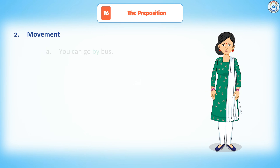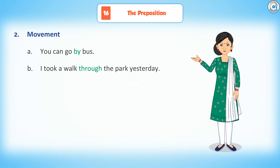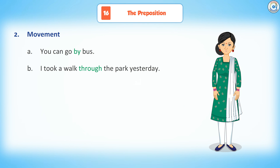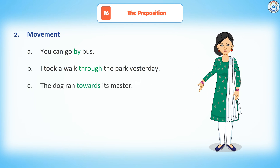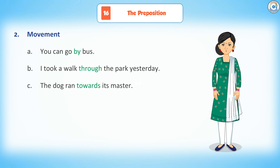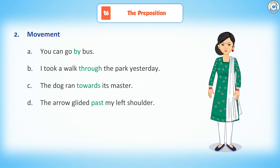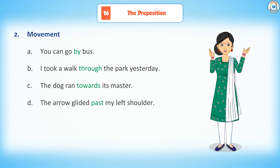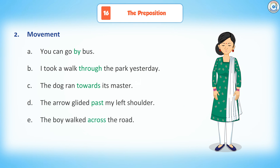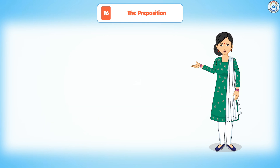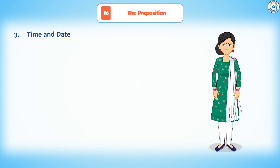Second, movement. You can go by bus. I took a walk through the park yesterday. The dog ran towards its master. The arrow glided past my left shoulder. The boy walked across the road.